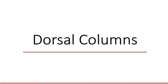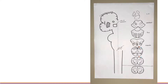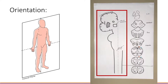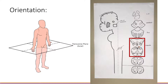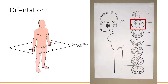The dorsal column medial lemniscus pathway. Firstly, let's get orientated. On the left we have a coronal section of the central nervous system. On the right we have corresponding transverse or axial sections of the spinal cord, the open and closed medulla, the pons, midbrain and internal capsule.